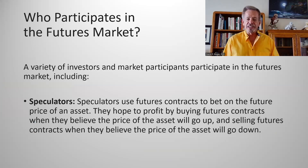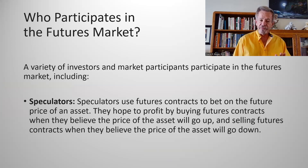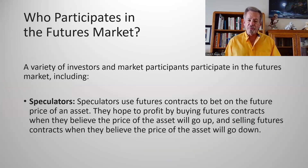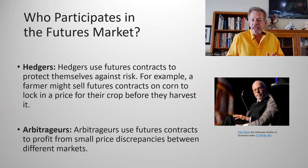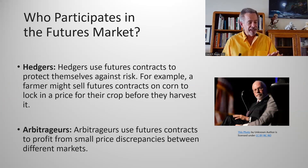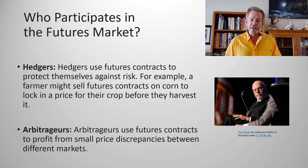The people that buy them are called speculators because it's speculative — this stuff is higher risk than stocks and bonds. You use them to bet on the future price of an asset, hoping to profit by buying futures contracts if you believe the price will go up. Hedgers use futures contracts to protect themselves against risk, taking the opposite position to offset their exposure.